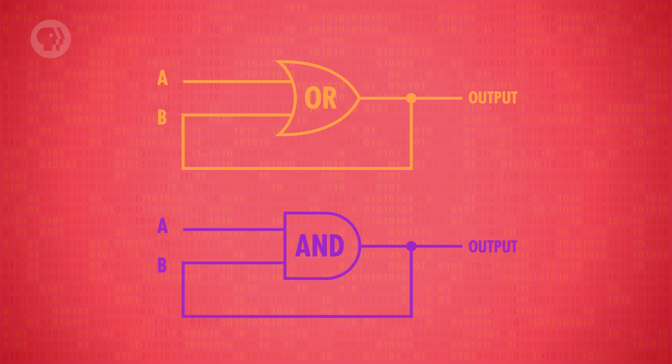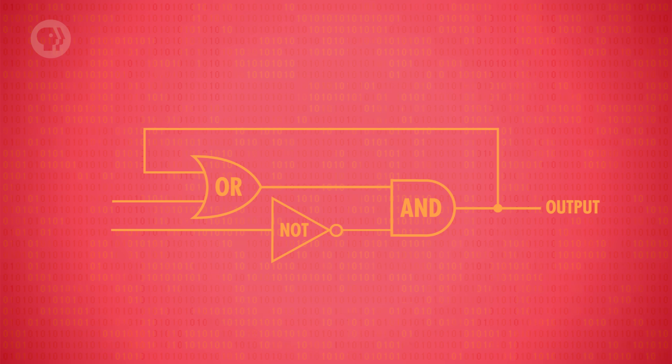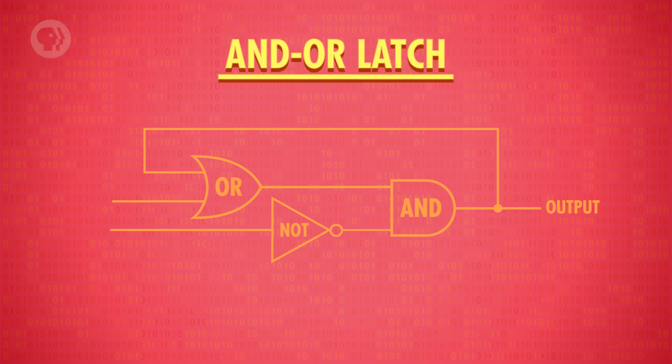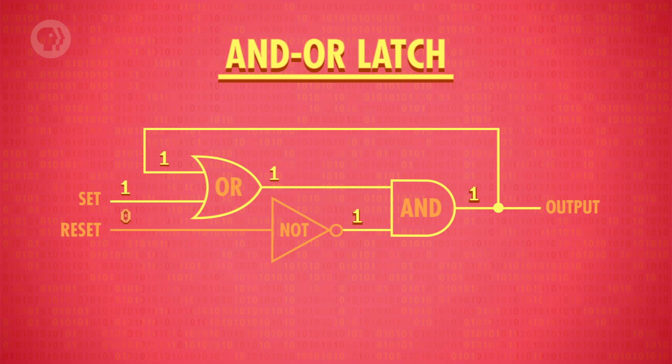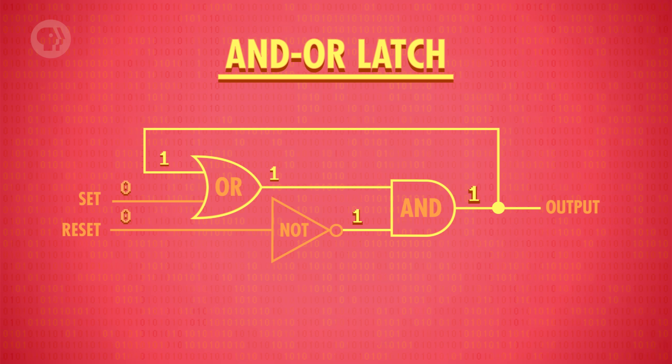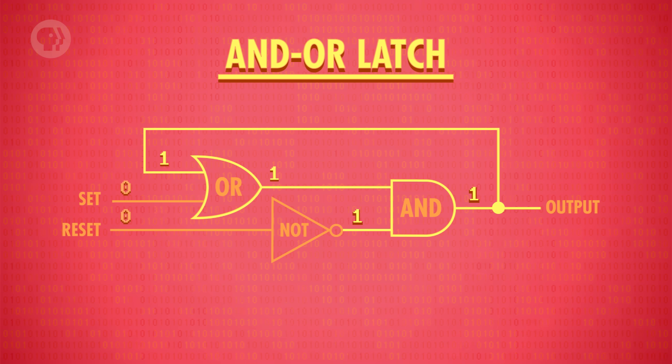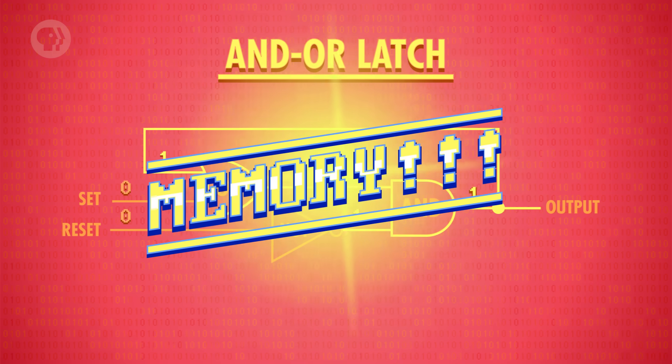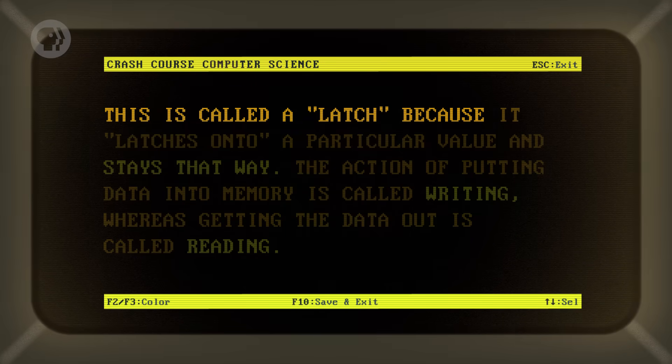The key to making this a useful piece of memory is to combine our two circuits into what's called the AND-OR latch. It has two inputs, a SET input, which sets the output to a 1, and a RESET input, which resets the output to a 0. If SET and RESET are both 0, the circuit just outputs whatever was last put in it. In other words, it remembers a single bit of information – memory! This is called a latch, because it latches onto a particular value and stays that way.